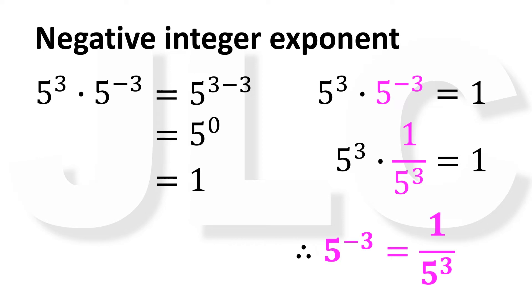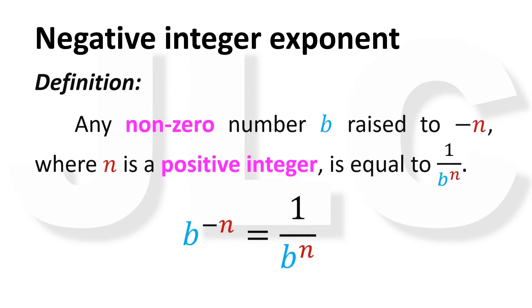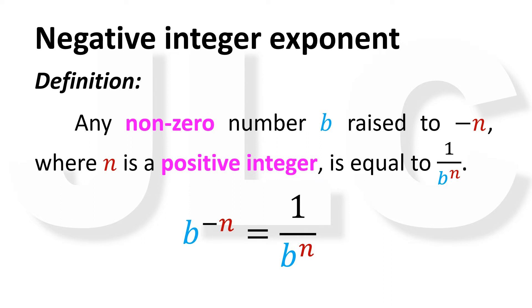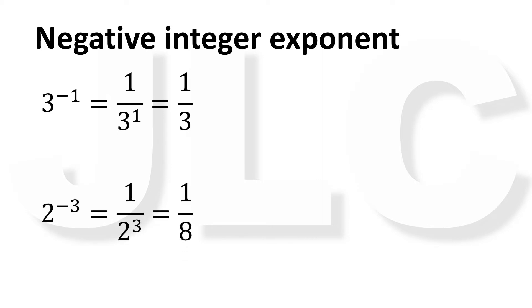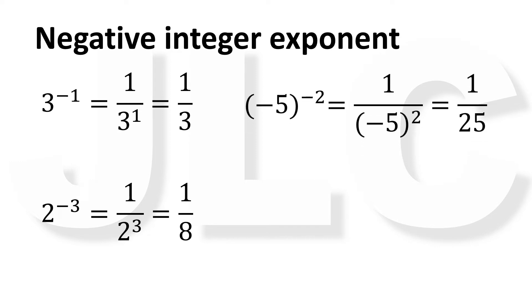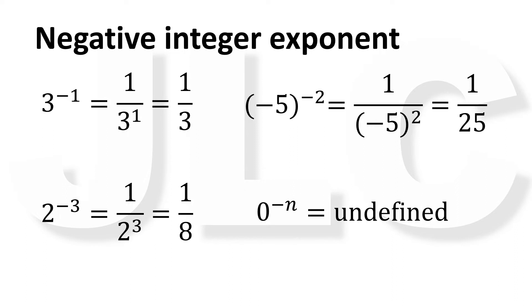This leads us to the following definition: any non-zero number b raised to negative n, where n is a positive integer, is equal to 1 over b raised to n. For example, 3 raised to negative 1 equals 1 over 3 raised to 1, equals 1 third. 2 raised to negative 3 equals 1 over 2 raised to 3, equals 1 over 8. Negative 5 raised to negative 2 equals 1 over the square of negative 5, equals 1 over 25. But take note that 0 raised to negative 1 is undefined.